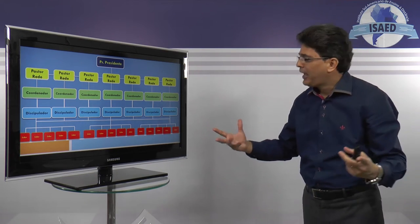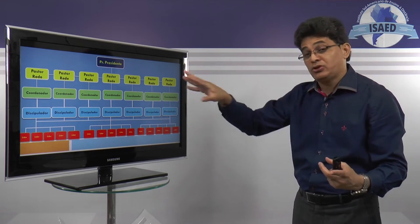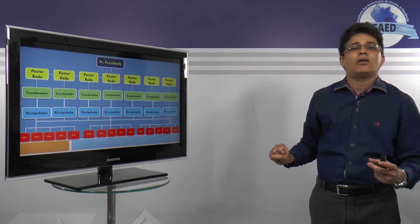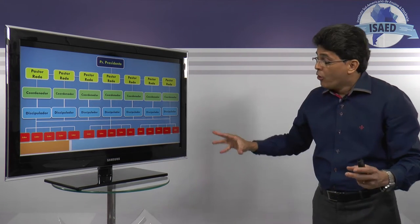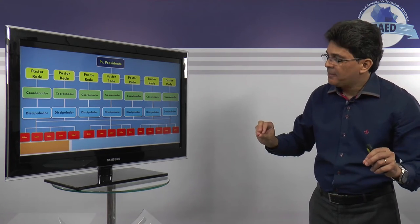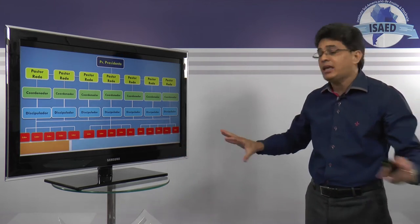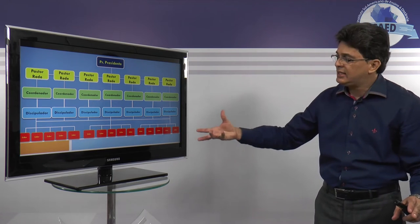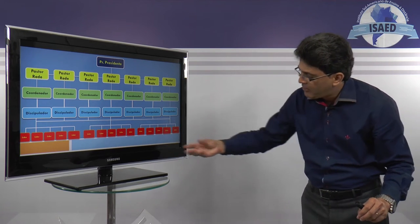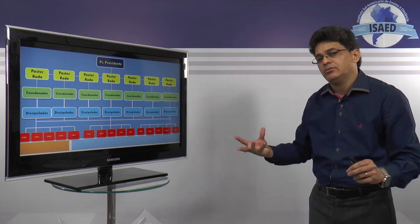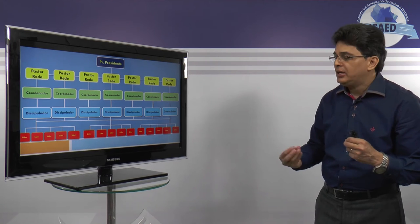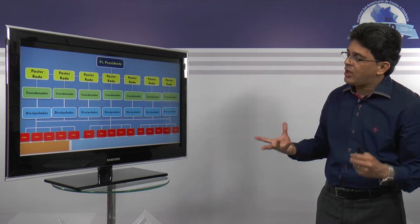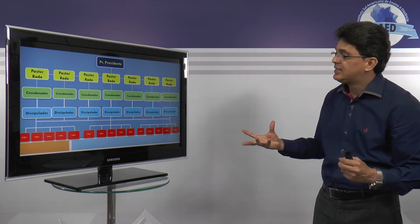Mas como assim, pastor Roberto? É, porque essas figuras aqui de discipuladores, coordenadores e pastores de rede, elas só surgem a partir do desenvolvimento e crescimento dessas células aqui embaixo. O que mais a gente precisa entender é que a importância maior é a multiplicação aqui embaixo das células. E na medida que se requer a necessidade de alguém cuidar desses líderes, a gente pega alguém desses líderes e leva para a escola de liderança.